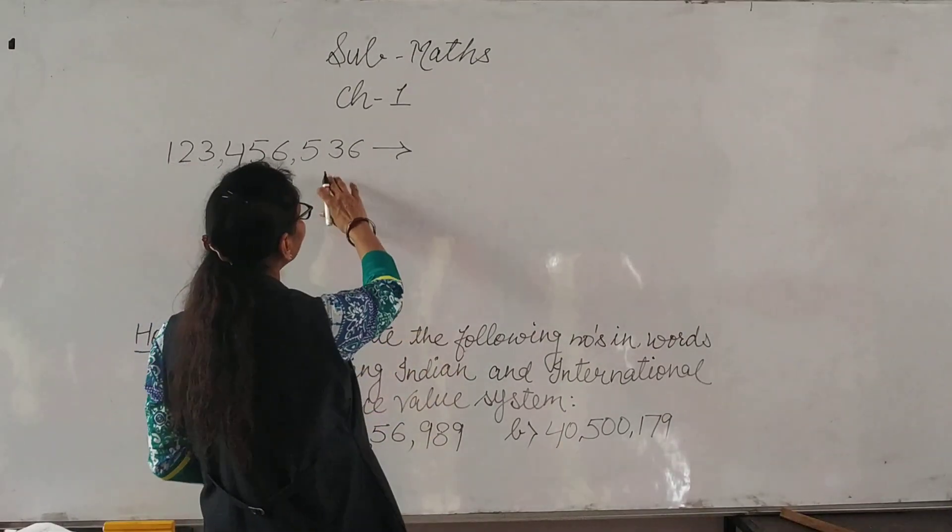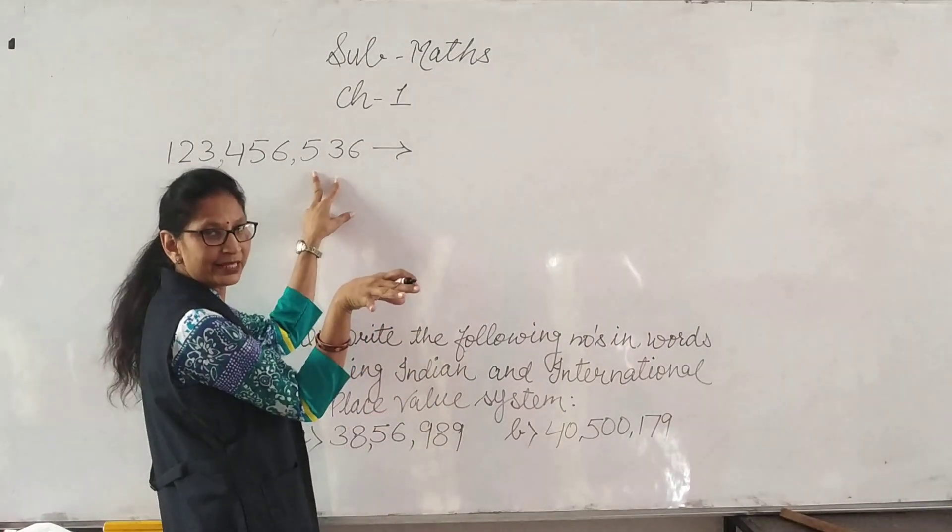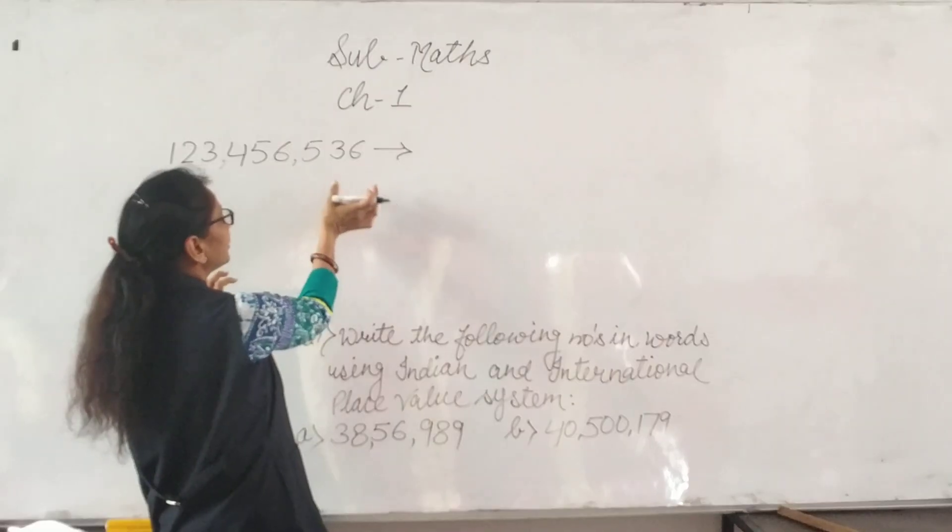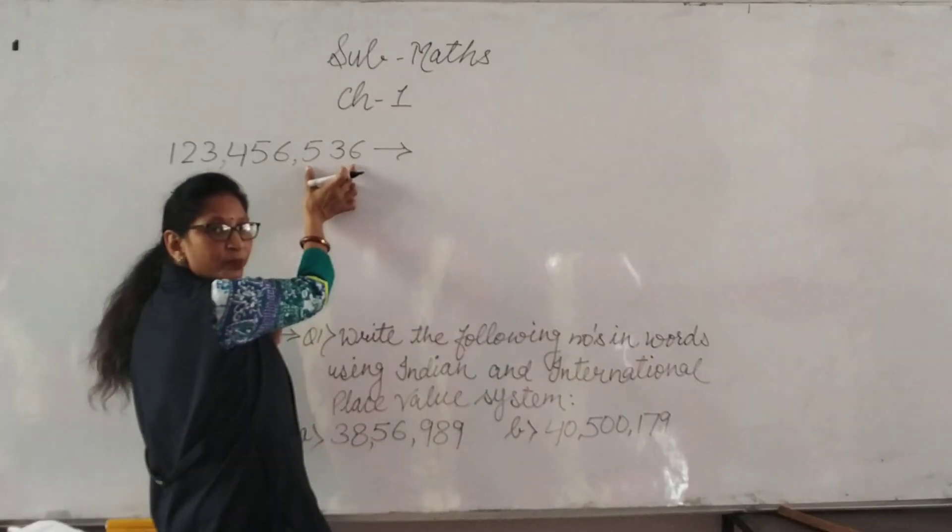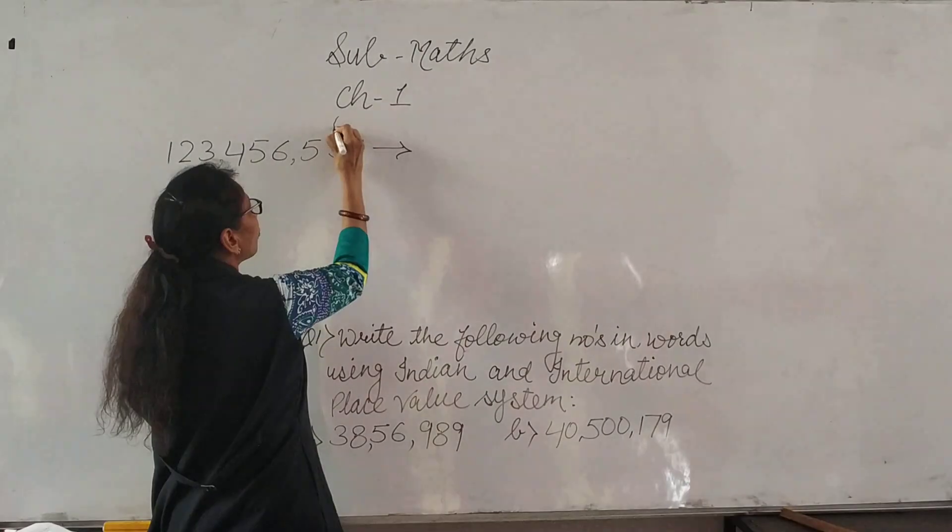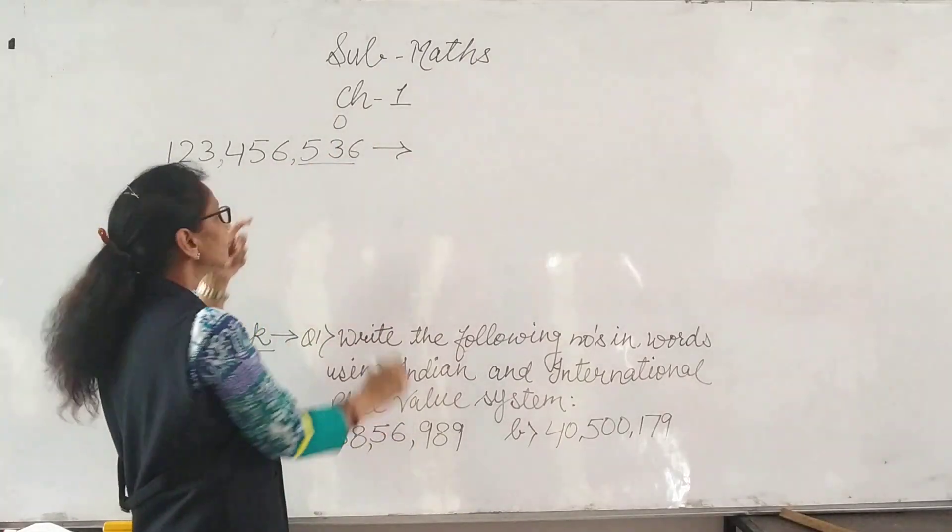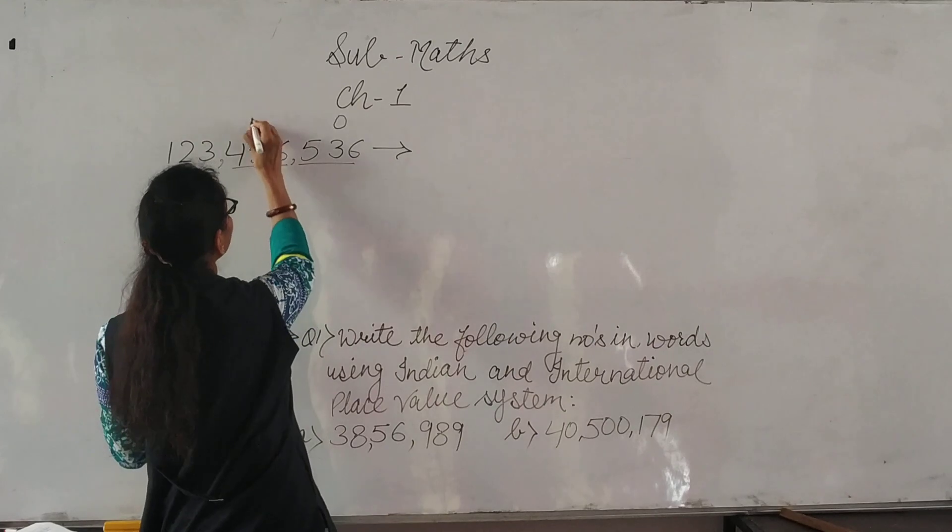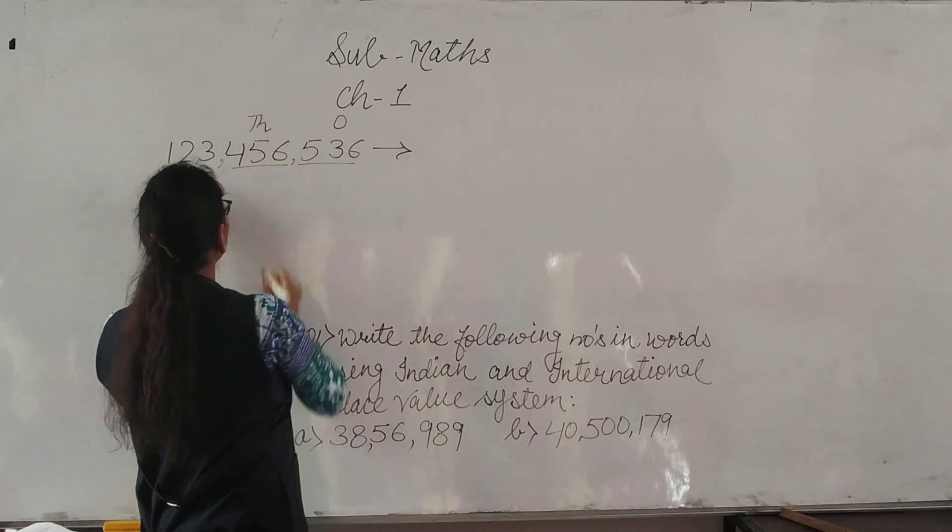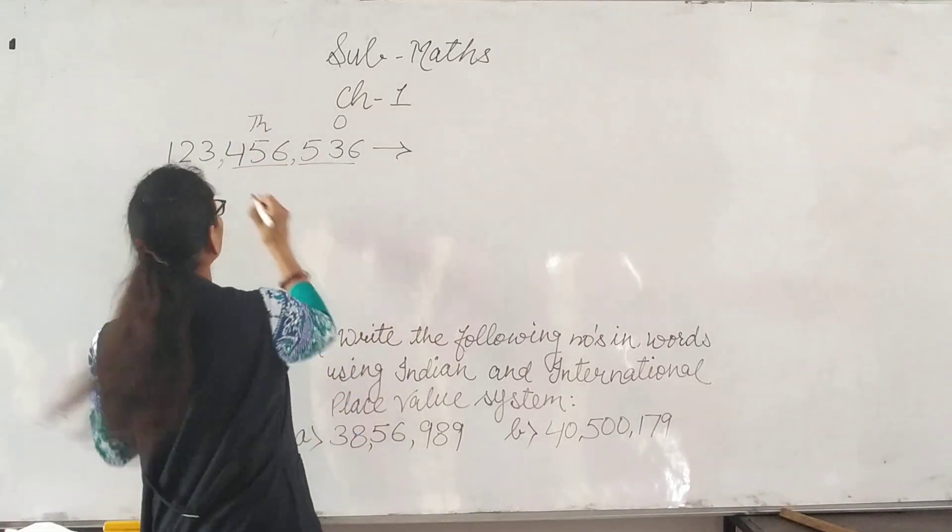Now, we put comma here. Now we can write period. That means grouping. Which group is this? This is ones group: 4, 5, 6. Which group is this? This is thousand group. And 1, 2, 3, this is million group.